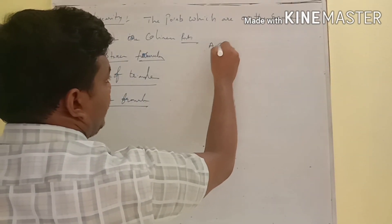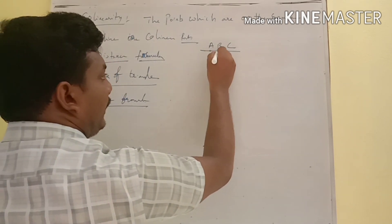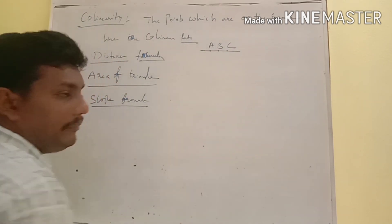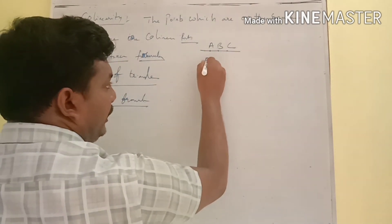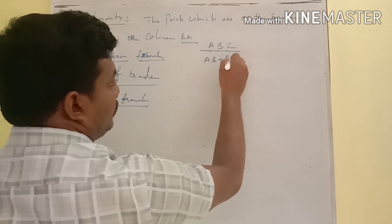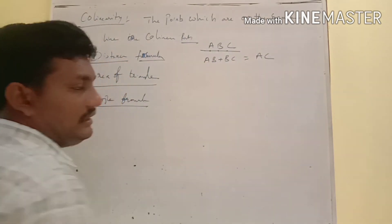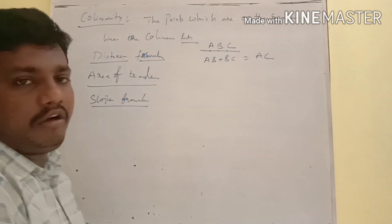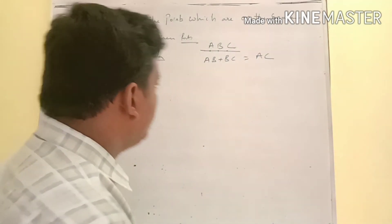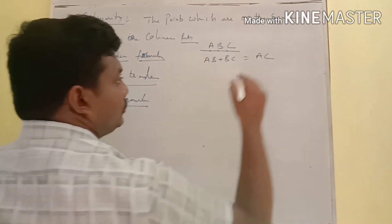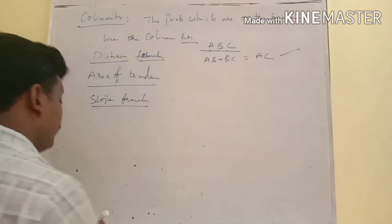If points A, B, C are on the same line, then the sum of any two distances is equal to the third distance. This is how to find the collinear points using the distance formula.